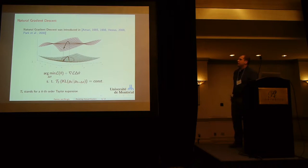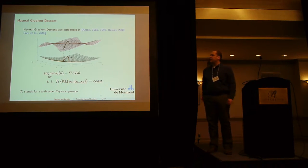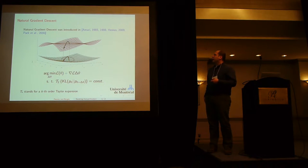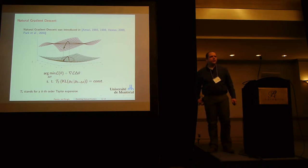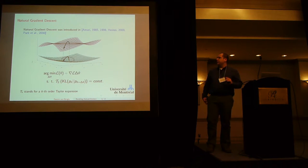So what is natural gradient? Natural gradient was introduced in the 80s, and Amari and co-authors were the first to introduce this algorithm. The idea is to move in the functional space.